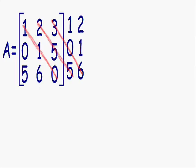In this first diagonal we have 1, 1, and 0. 1 times 1 is 1, and 1 times 0 is 0. In the second diagonal we have 2 times 5 which is 10, and 10 times 5 which is 50. In the third diagonal we have 3 times 0 which is 0, and 0 times 6 is also 0.